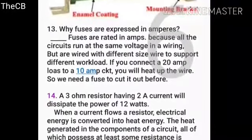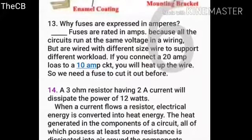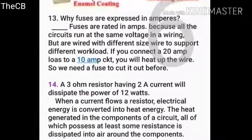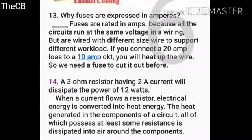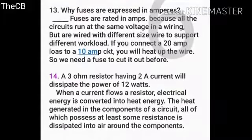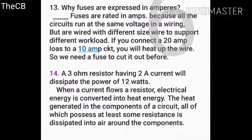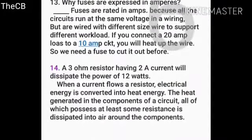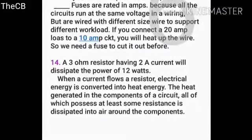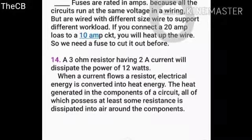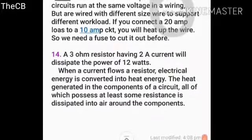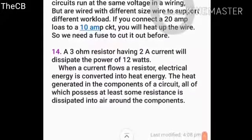When a current flows through a resistor, electric energy is converted into heat energy. The heat generated in the components of a circuit — all of which possess at least some resistance — is dissipated into the air around those components.